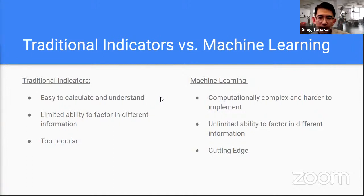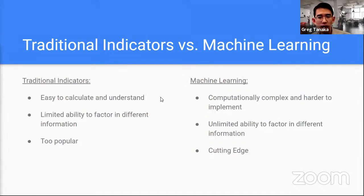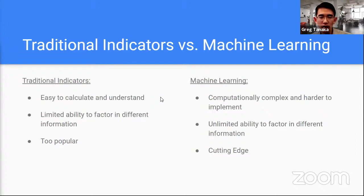The other thing that's really neat about machine learning is it gives you a very cunning edge. Even some large institutions have not really adopted machine learning yet, so you could get a differentiation on your trading. Those are the reasons why machine learning is very exciting right now for algorithmic trading.